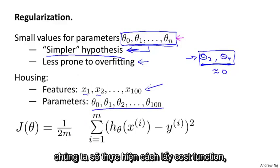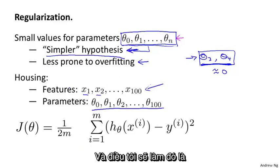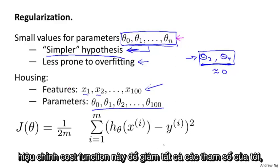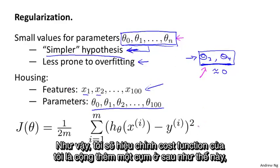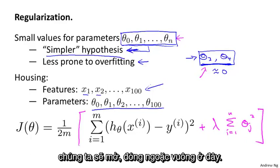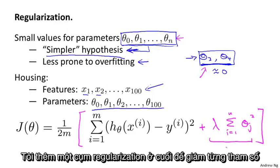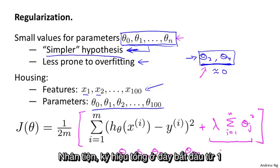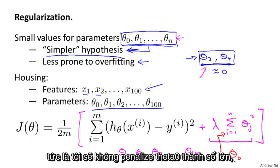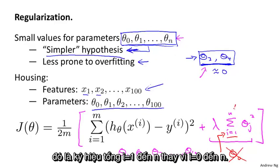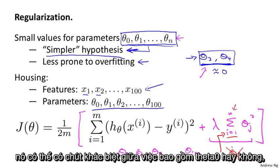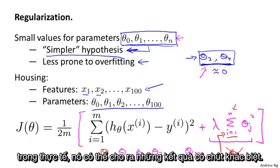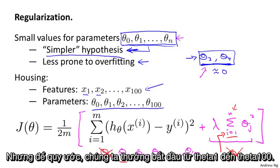So in regularization, what we're going to do is take our cost function. Here's my cost function for linear regression. And what I'm going to do is modify this cost function to shrink all of my parameters, because I don't know which one or two to try to shrink. So I'm going to modify my cost function to add a term at the end. I'm going to add an extra regularization term at the end to shrink every single parameter. And so this term would tend to shrink all of my parameters, theta 1, theta 2, theta 3, up to theta 100. By the way, by convention, the summation here starts from 1. So I'm not actually going to penalize theta 0 being large. That's sort of a convention that the sum is from i equals 1 through n rather than i equals 0 through n. But in practice, it makes very little difference.